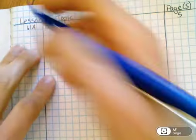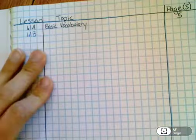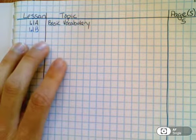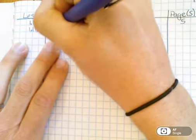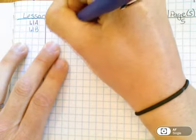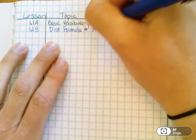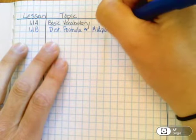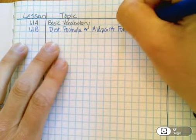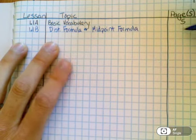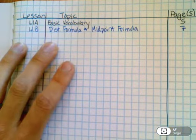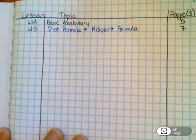Today's lesson is 1.1b. So go ahead and fill this out on your table of contents. And it's going to be the distance formula. And I'm going to abbreviate here, distance formula and the midpoint formula. And I'll be starting mine on page 7, but just check to see where your next blank page is before you begin.